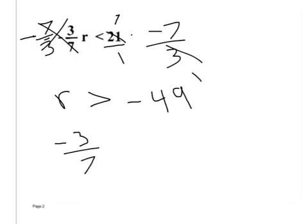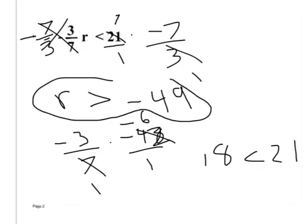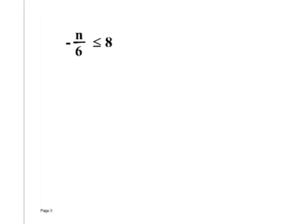Three-sevenths times negative 48 — let's go 42. That makes it even. That's negative six. What's negative three times negative six? Is 18 less than 21? Yes, it is. So what does R have to be? Greater than negative 49.